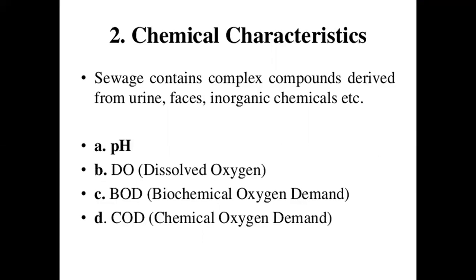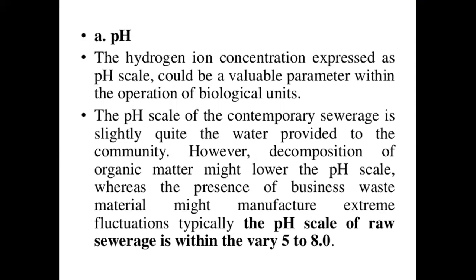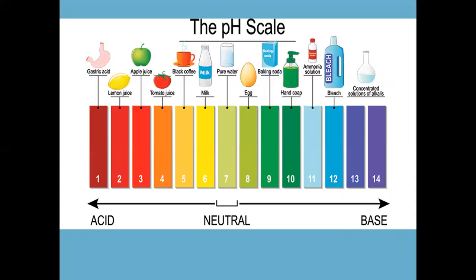Chemical characteristics include parameters such as pH, BOD, COD, and theoretical oxygen demand. The pH value — hydrogen ion concentration expressed on the pH scale — is a valuable parameter in the operation of biological treatment units. The pH of sewage is slightly different from that of the water supplied to the community. Decomposition of organic matter might lower the pH, whereas industrial waste materials might cause extreme fluctuations. Typically the pH of raw sewage is within the range of 5 to 8. Drinking water pH normally varies from 6.5 to 7.5.